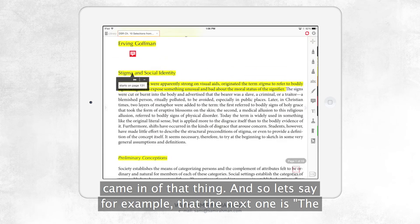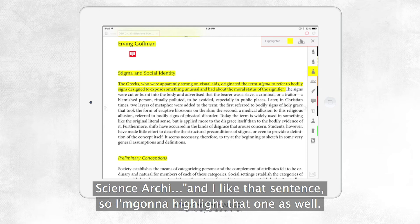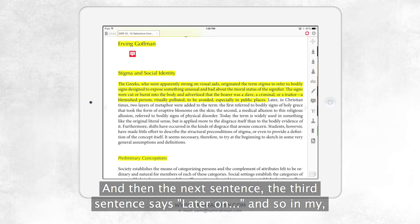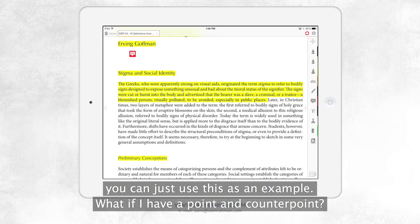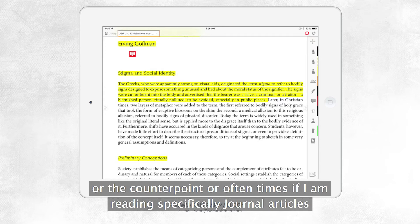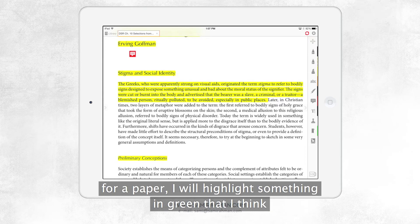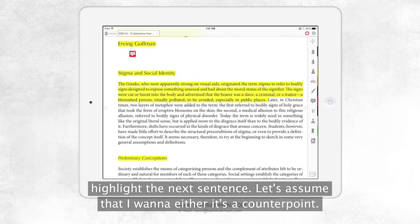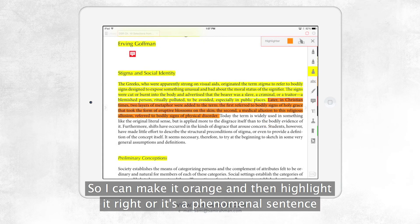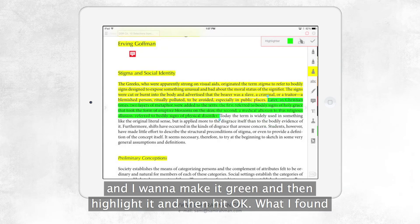And so let's say, for example, that the next one is the signs are cut. And I like that sentence. So I'm going to highlight that one as well. And then the next sentence, the third sentence says later on. And so in my notes, I want to make a distinction. Let's say these are, I'm just going to use this as an example. What if I have a point and counterpoint? And so I want to make a distinction between what the point is or the counterpoint. Or oftentimes, if I am reading specifically journal articles for a paper, I will highlight something in green that I think is absolutely amazing that I need to absolutely put in there. So I'm going to highlight the next sentence. Let's assume that I want to, either it's a counterpoint so I can make it orange and then highlight it, right? Or it's a phenomenal sentence and I want to make it green and I highlight it. And then I hit OK.